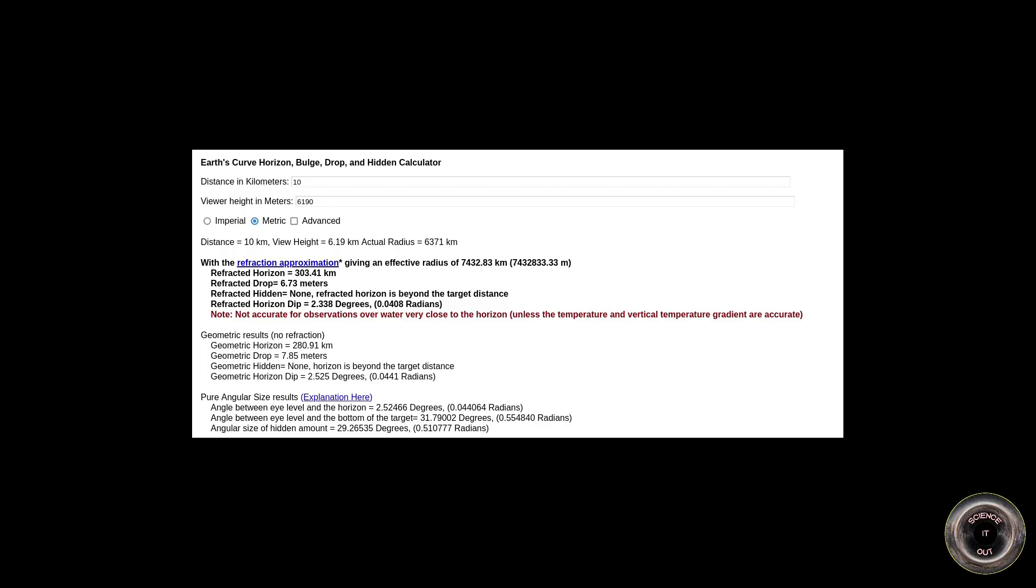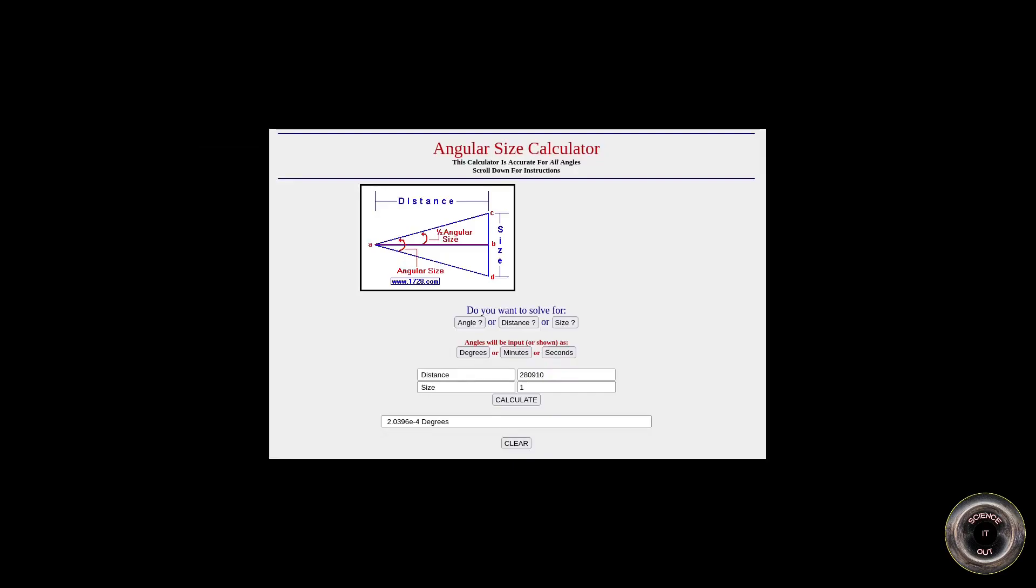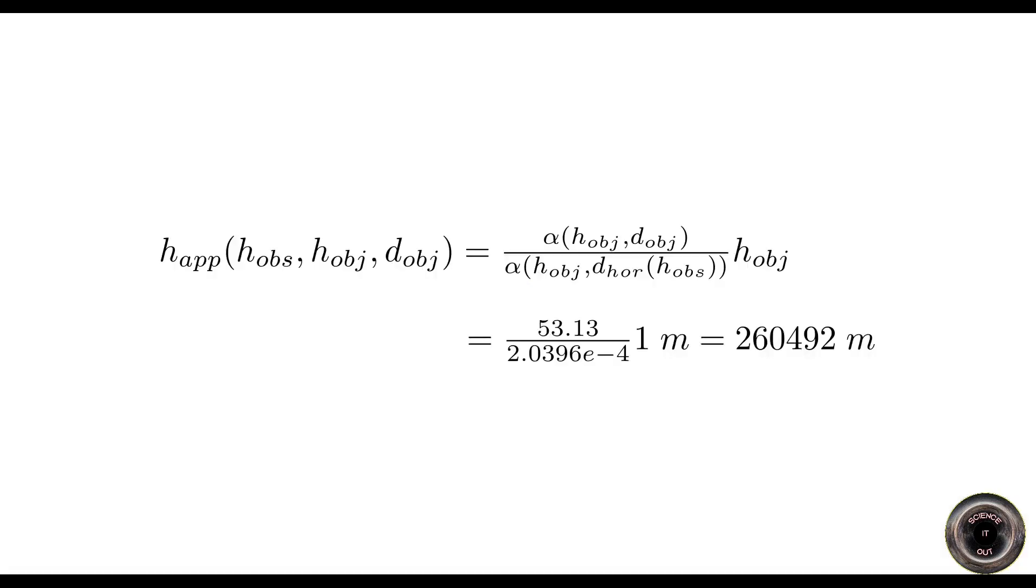The angular size of the stick at this distance is 2.0396 e-4 degrees, which is two parts in 10,000. So if the observer is on top of Denali and looks at a 1 meter stick from the distance of 1 meter, the apparent height of the stick comes down to over 260 kilometers.